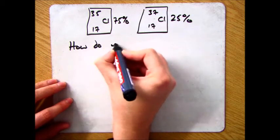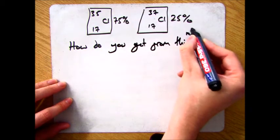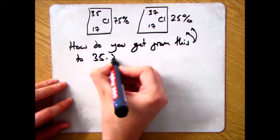This video is going to answer the question of how we get from 75% of chlorine 35 and 25% of chlorine 37 to the overall mass of chlorine 35.5.